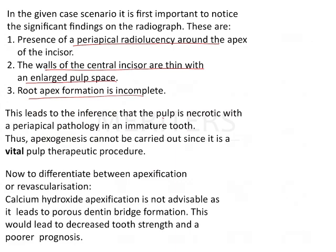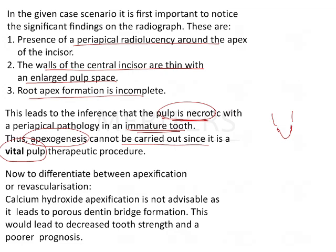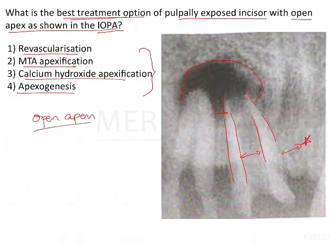In this situation we know that the pulp is necrotic, and because it is an immature tooth with an open apex, we cannot do apexogenesis. For apexogenesis we require vital pulp, because the vital pulp is what aids in continued root development. When there is no vital pulp, apexogenesis cannot be done. Since there is a periapical radiolucency indicating a necrotic pulp, apexogenesis is ruled out.